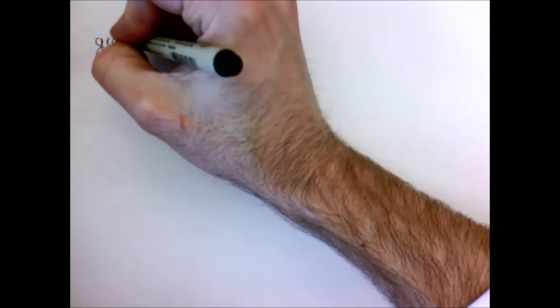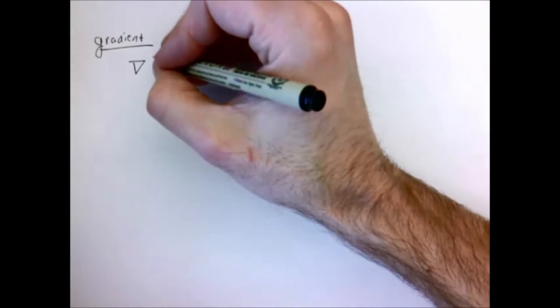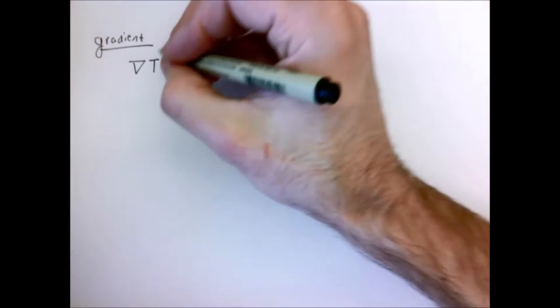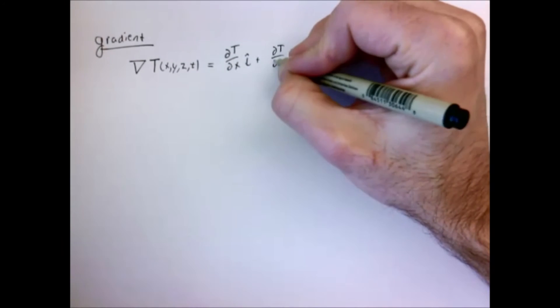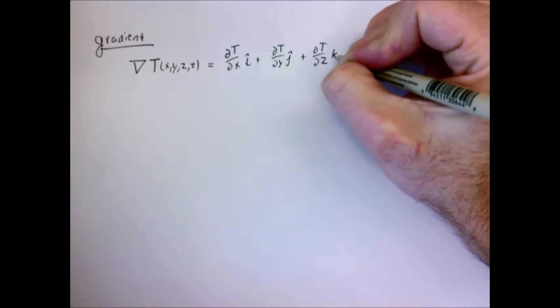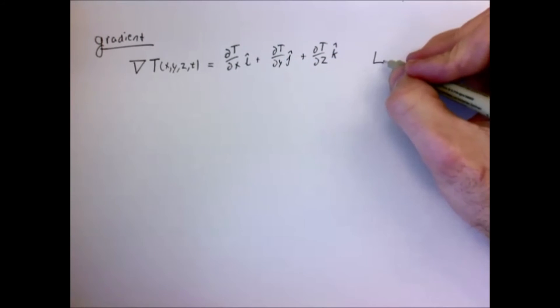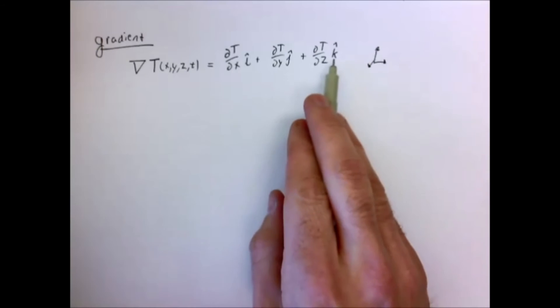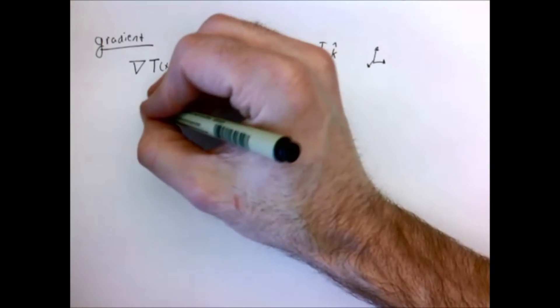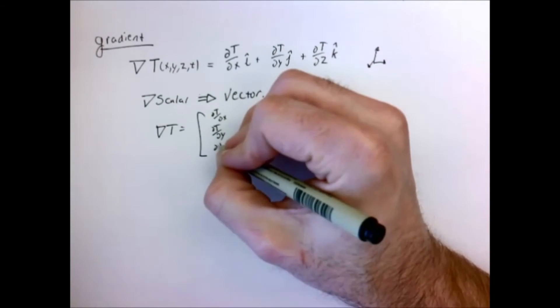Now let's do some derivatives. When working with vectors we have to be very specific about what we mean. Let's start with the gradient, written with an upside-down triangle. Taking the gradient of a scalar field — say temperature as a function of x, y, z, and time — the gradient is simply the derivative in space in each direction, and we return the result as a vector. So del T equals the partial derivative of T with respect to x times i-hat, plus partial with respect to y times j-hat, plus partial with respect to z times k-hat. The gradient of a scalar becomes a vector.